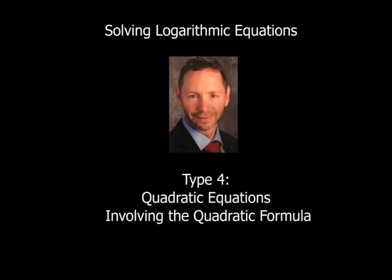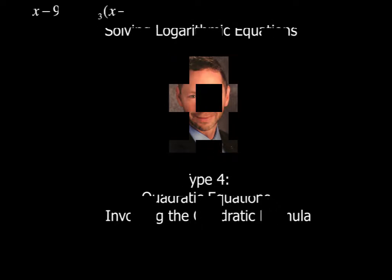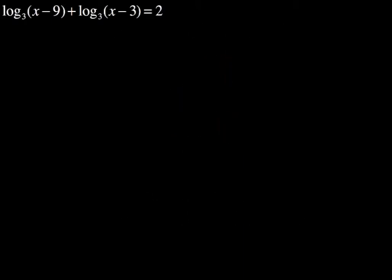So let's take a look at a quick example. Here's our first problem. We've got log base 3 of x minus 9 plus log base 3 of x minus 3, equaling 2. Now the first thing we're going to do is use our properties of logs. Anytime you see adding in between logs and the bases are the same, we can combine those by using multiplication.